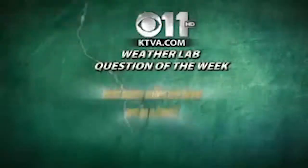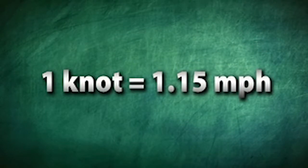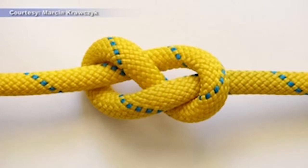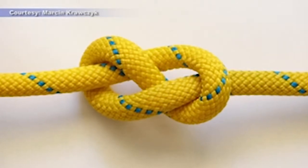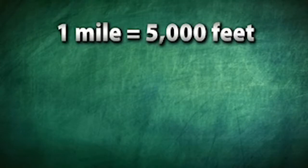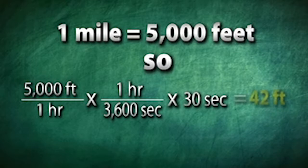How many miles per hour is in a knot? That is our KTVA Weather Lab Question of the Week. The short answer is one knot equals 1.15 miles per hour. Mariners use knots — literal knots on a rope — to measure their speed before speedometers were invented. They figured a mile was about 5,000 feet, so if a ship was traveling one mile per hour, they would go about 42 feet every 30 seconds.